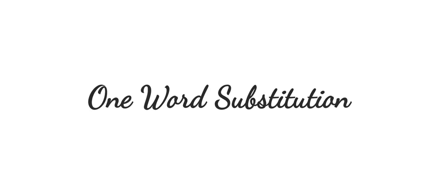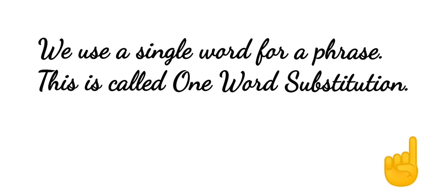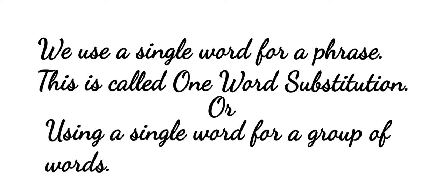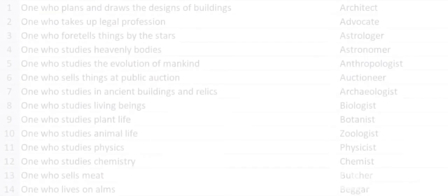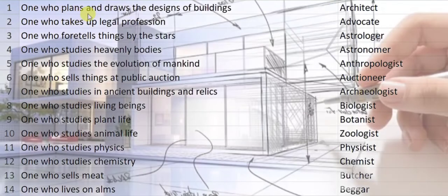One word substitution. We use a single word for a phrase — this is called one word substitution, or using a single word for a group of words. Let's see some examples. One who plans and draws the designs of buildings is called an architect.